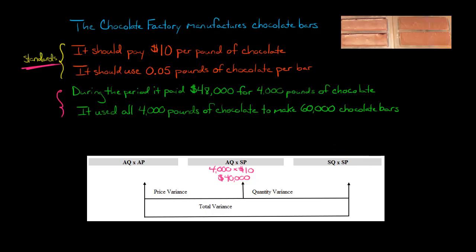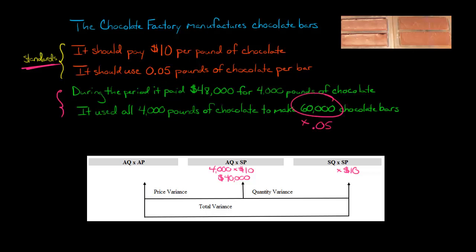Now for standard quantity times standard price, the standard price is the same — $10 — so we carry that over. For the standard quantity, we need to convert to pounds. We made 60,000 chocolate bars, so what would have been the standard amount of pounds? We take 60,000 and multiply it by 0.05, because our company standard is 0.05 pounds of chocolate per bar. Multiplying that out gives us 3,000 pounds as our standard quantity.